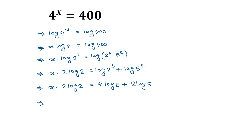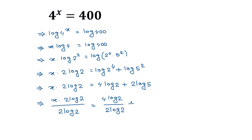Now dividing both sides by 2 times log of 2: the left side is x times 2 log of 2 divided by 2 log of 2, equal to 4 times log of 2 divided by 2 times log of 2, plus 2 times log of 5 divided by 2 times log of 2.